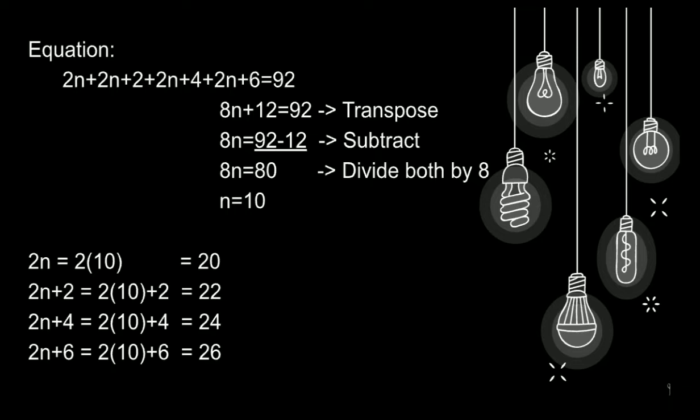So, nakuha na natin ang value ng ating n. Pero hindi pa yan ang tamang sagot dahil ito ang gagamitin natin para makuha yung apat na consecutive even integers. So, babalik tayo sa ating formula, which is yung 2n, 2n+2, 2n+4, and 2n+6. Lahat ng n dyan, papalitan natin ng 10. So, 2 times 10 is equals to 20. 2 times 10 plus 2 is equals to 22. 2 times 10 plus 4 is equals to 24. And 2 times 10 plus 6 is equals to 26.